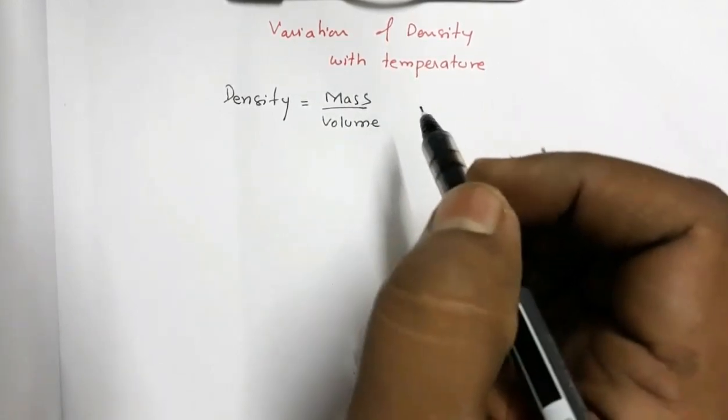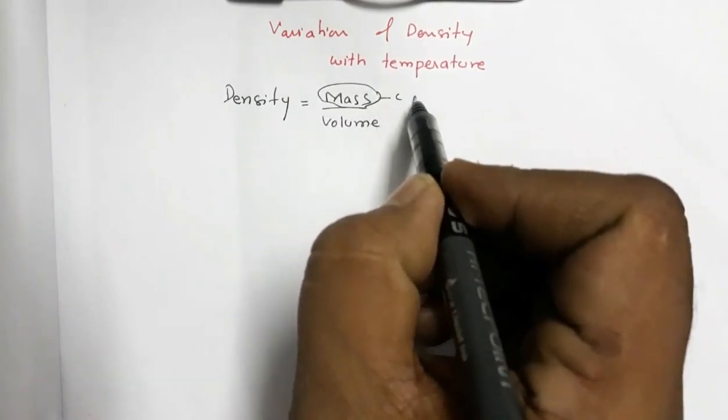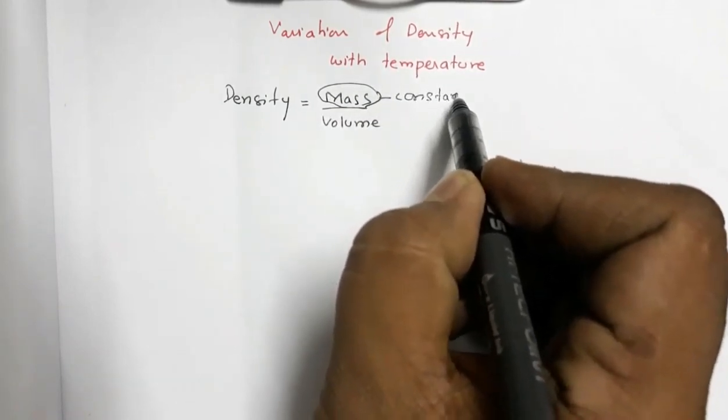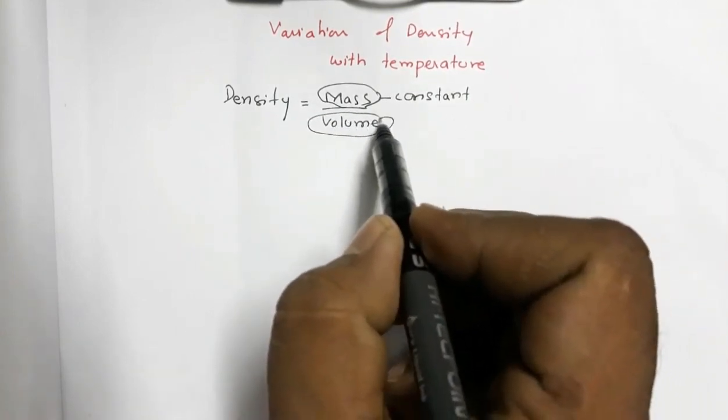Now obviously when there is a change in temperature, the mass, this term will remain constant. And we have seen that when temperature increases, the volume of a substance increases.